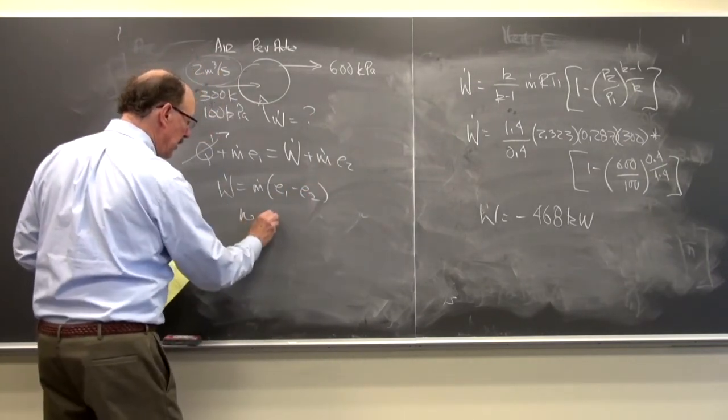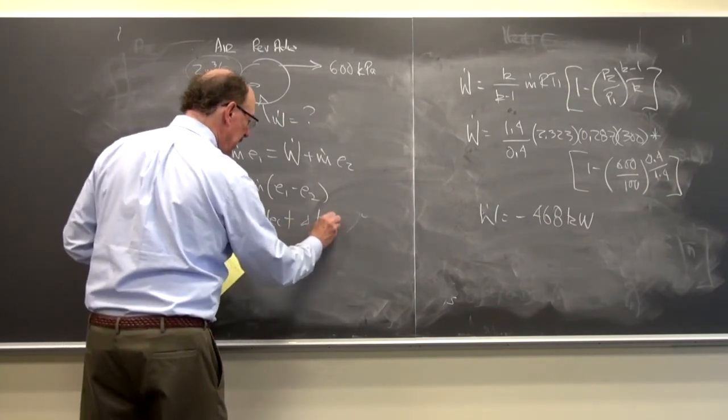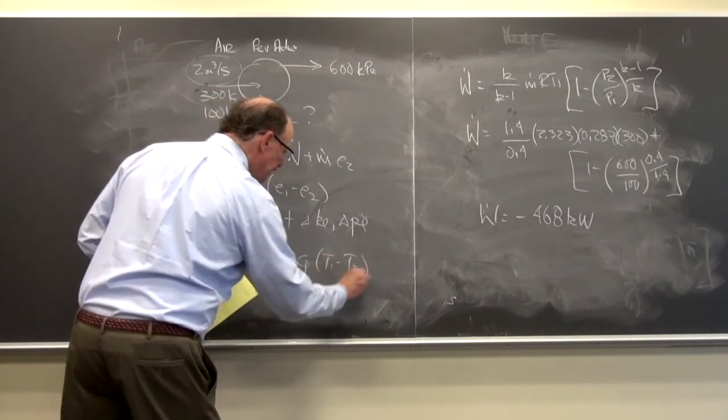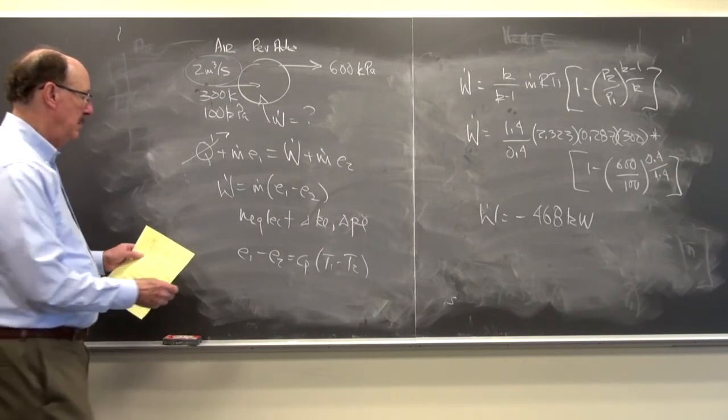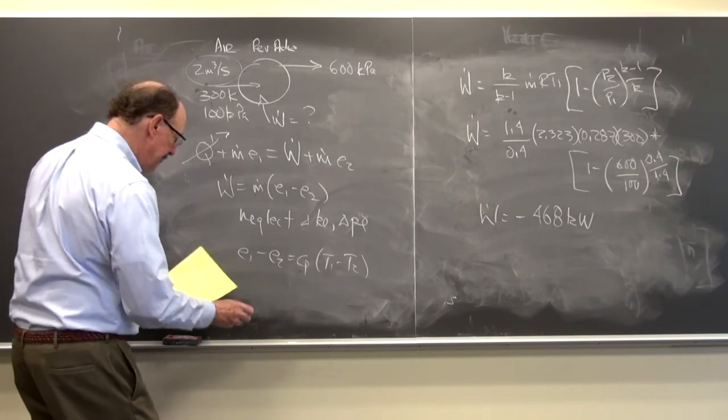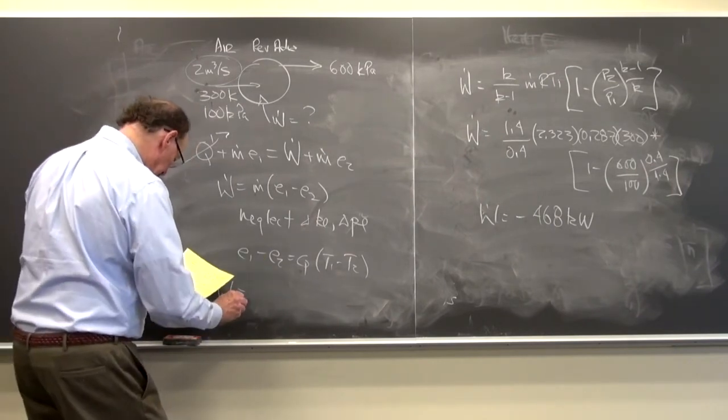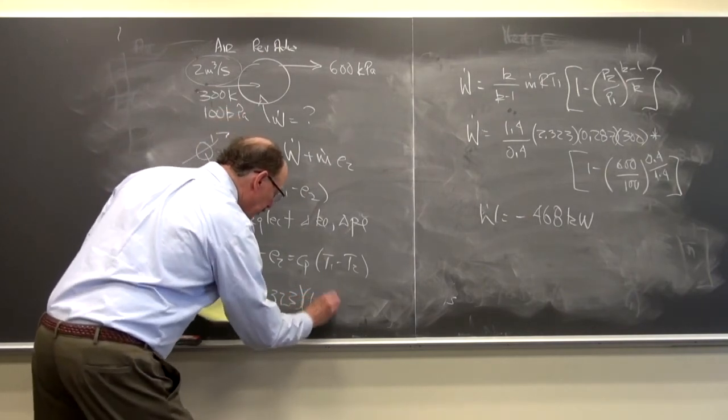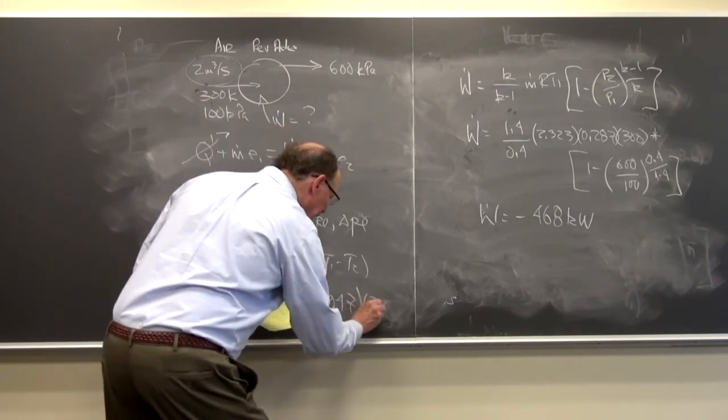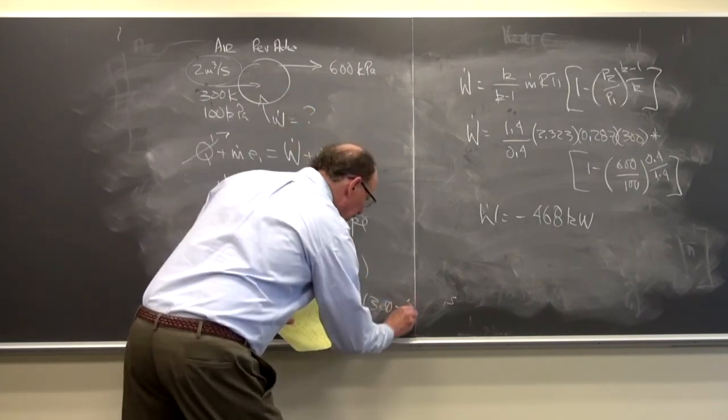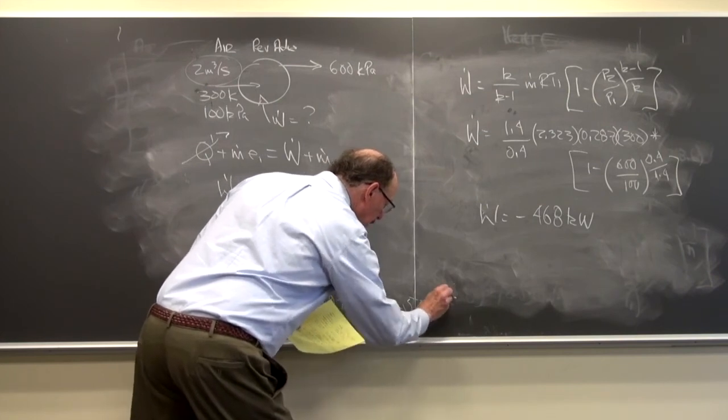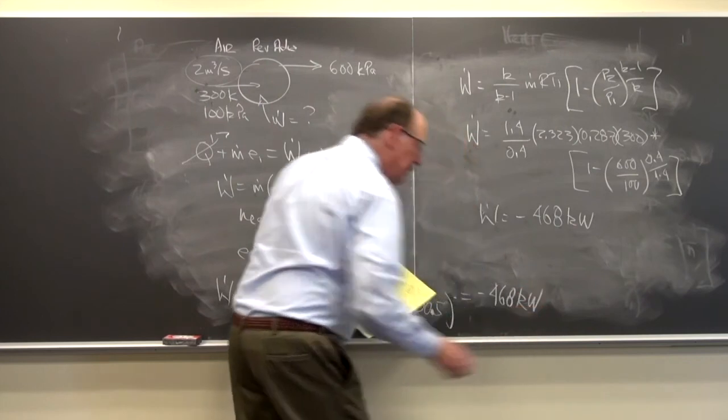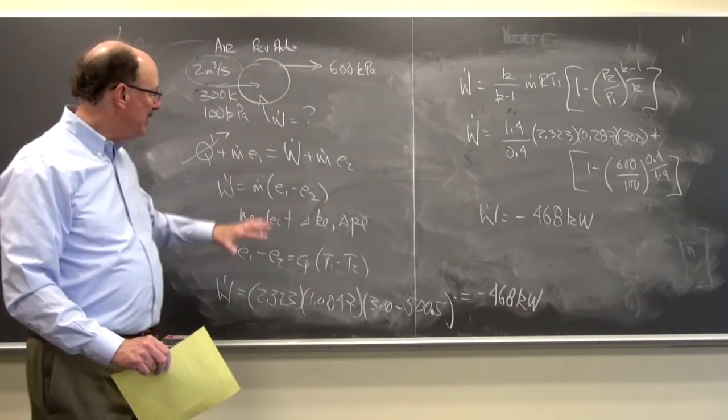So the power is equal to M dot times E1 minus E2. And if I neglect delta KE and delta PE, E1 minus E2 is equal to C sub p T1 minus T2. And if you substitute in, I have the mass flow rate, I have C sub p. We get the same answer. So I get that W dot is equal to 2.323 kilograms per second times C sub p 1.0047 times T1 300 minus T2 500.5. And we get minus 468. So sometimes if I have a reversible adiabatic process, it's easier to do the first law to get the power. If it's a polytropic process, I have to use the general equation.